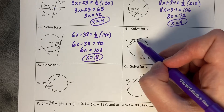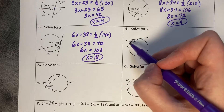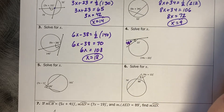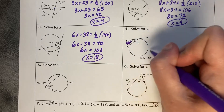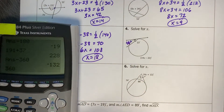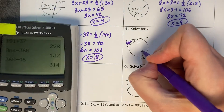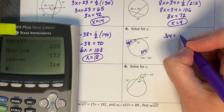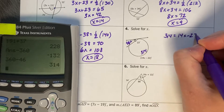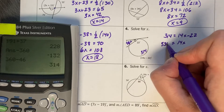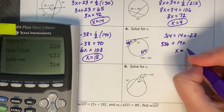If we know that this angle is 23, then its corresponding arc is double the size, so that arc is 46. Then if that's 46, we subtract from 360 to get the measure of the other arc. So 360 minus 46 is 314. We can say 314 degrees equals 14x minus 22. So 14x equals 336, divide by 14, and x equals 24.